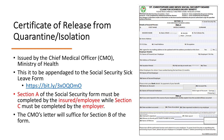This Social Security form — Section A must be completed by the employee or the insured, and Section C must be completed by the employer. This form can then be attached to the certificate of release from quarantine or isolation.